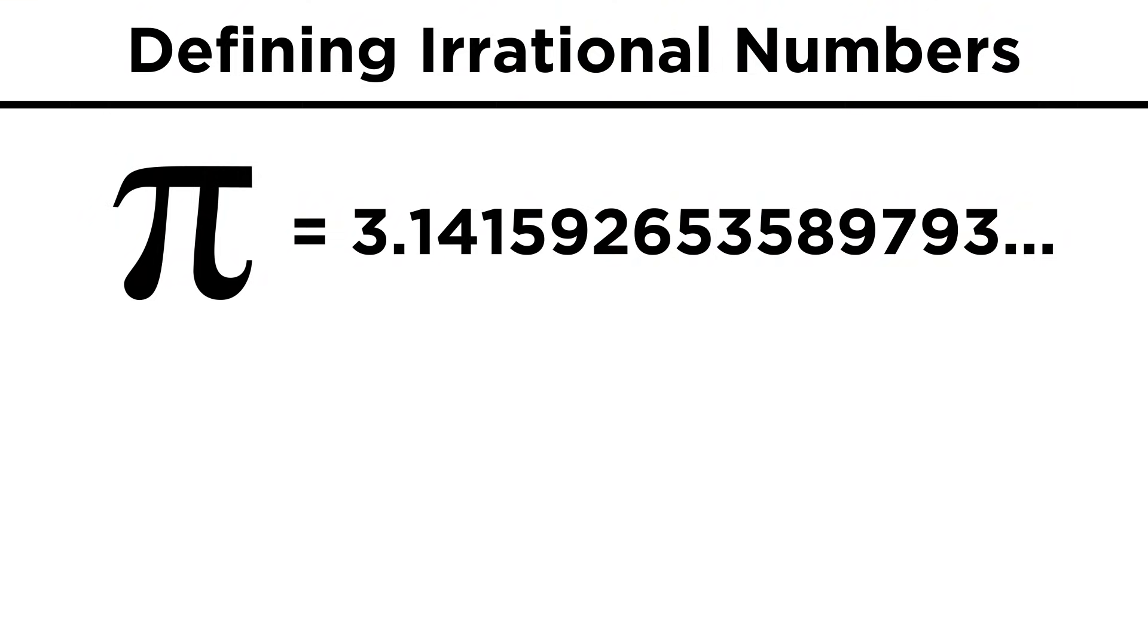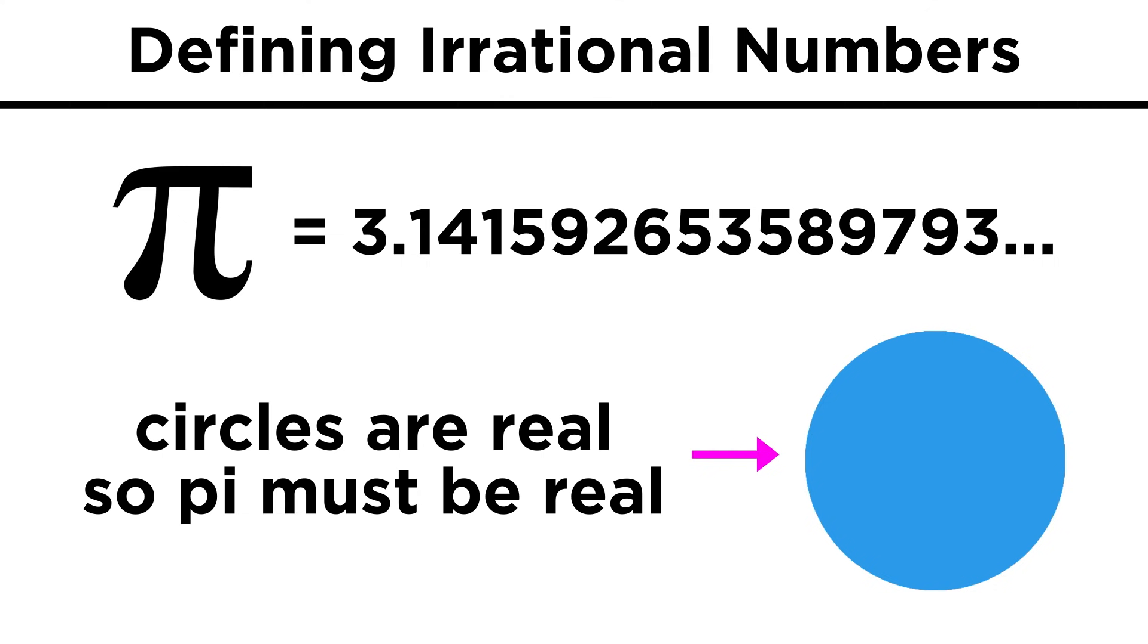Once again, even though pi is irrational, it is a real number, because circles are real, and all circles have a circumference. But we will get to triangles and circles when we start looking at geometry right after this.